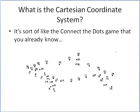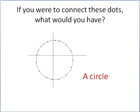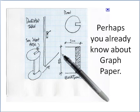You may already be somewhat familiar with the Cartesian coordinate system through the connect the dots game. If you connect the dots, you would see something that looks like a dolphin. Here, if you connect the dots, you can see that you would have a circle. You may be familiar with graph paper—it has lines all over it to help you draw things and keep them straight. It too is based on the Cartesian coordinate system.